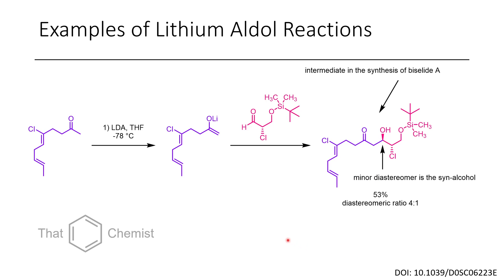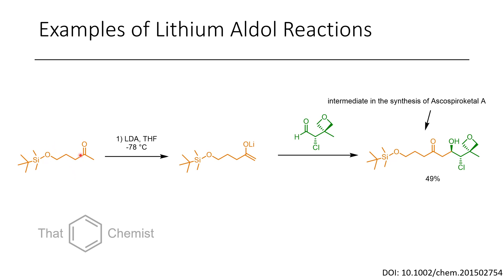Here are a couple of examples of LDA being used in synthesis. This vinyl chloride species is treated with LDA to form a lithium enolate, then treated with a chiral aldehyde containing a TBS-protected alcohol, forming a hydroxy-containing product. There's no syn or anti distinction here because a methyl ketone is used — if there were an R group, we'd see syn and anti products. Because there's a chiral center on the starting material, the base will preferentially react from the top face, so the major diastereomer is the anti-product. There's a 4-to-1 ratio, and this is a single enantiomer.